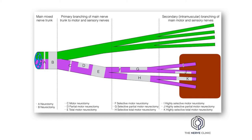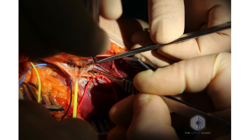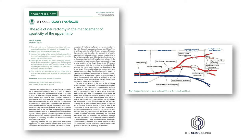The cutaneous innervation, shown in green, is left intact to avoid any pain. We previously described the role of motor neurectomy in the management of spasticity in a published paper, along with this new nomenclature for determining where the sectioning is taking place.